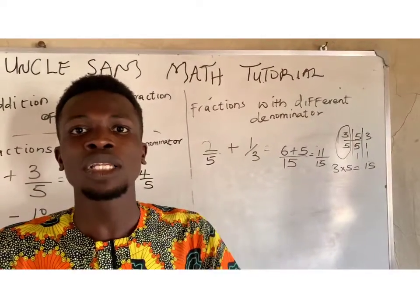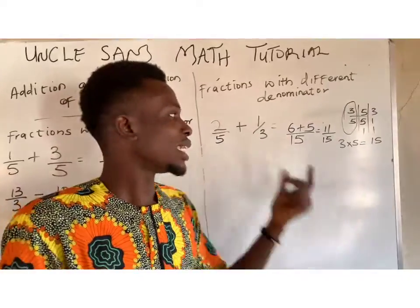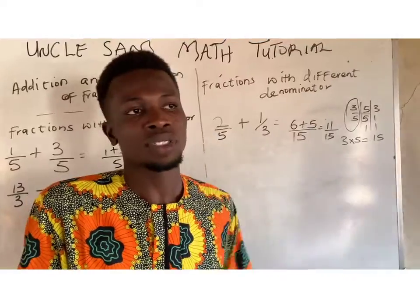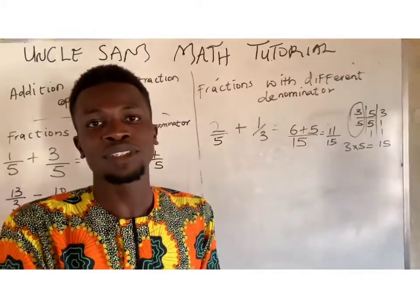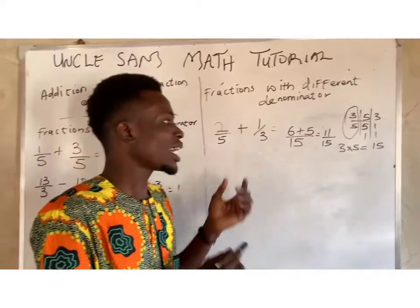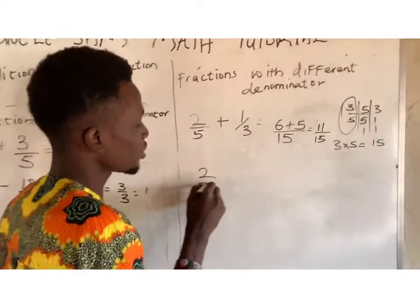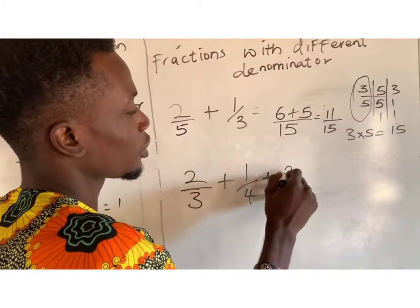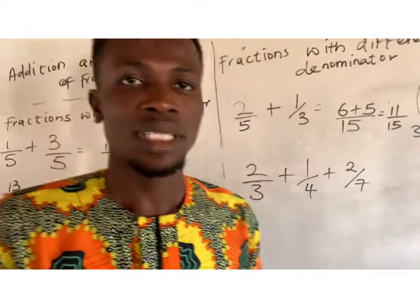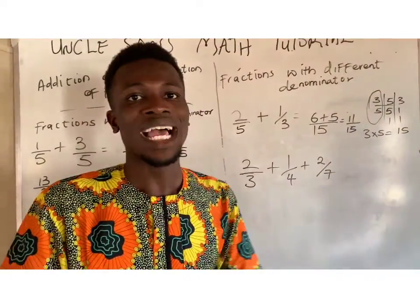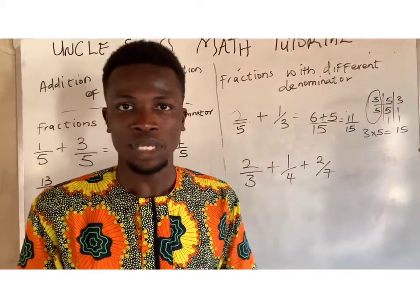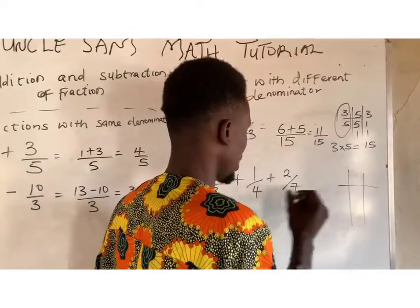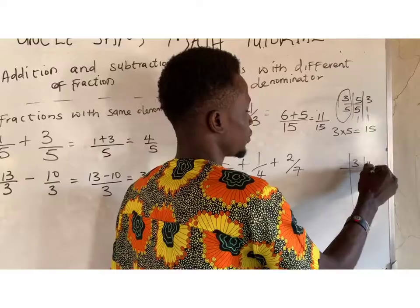Another example: you might have 2 over 3 plus 1 over 4 plus 2 over 7. This is a combination of three fractions that we need to add together. It is the same approach — because they have different denominators, we just have to find their LCM, which is the LCM of 3, 4, and 7.